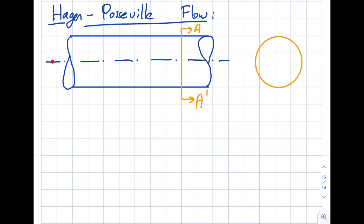Today I'm going to talk about Hagen-Poiseuille flow. We have a circular cross-section such as a pipe, and we are analyzing the viscous flow inside a pipe. I went ahead and took a cross-section A-A' to illustrate that the cross-section is circular. Looking at the coordinate axis, this is going to be the R direction, I will have theta, and I will have the Z direction.